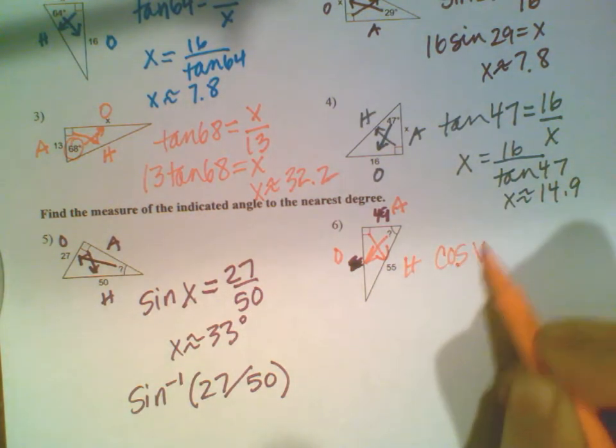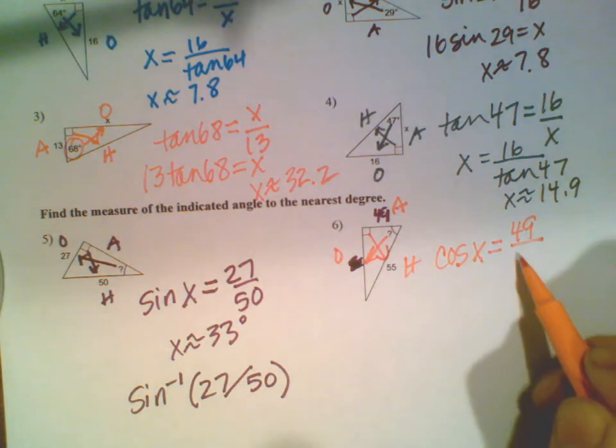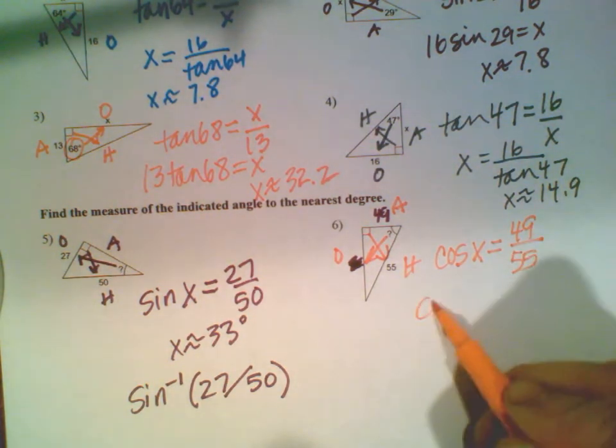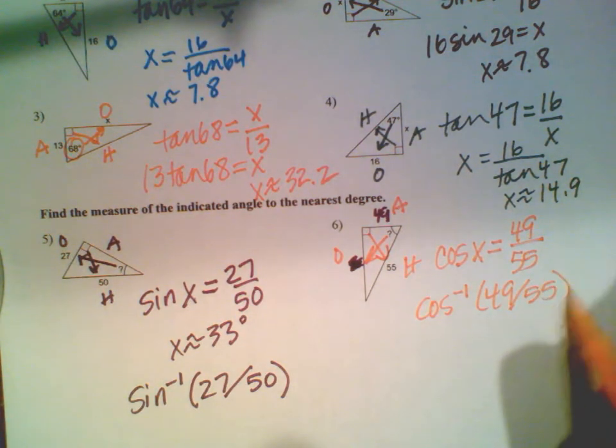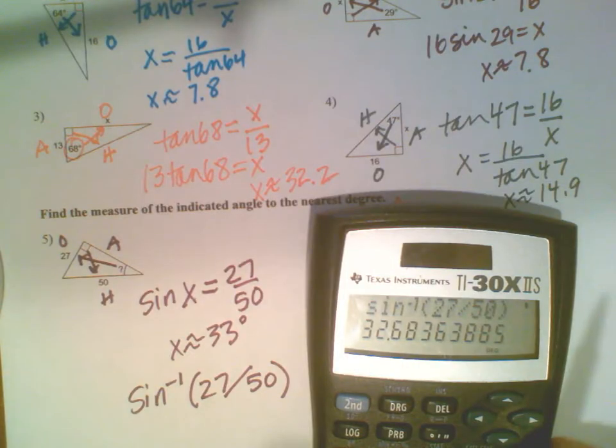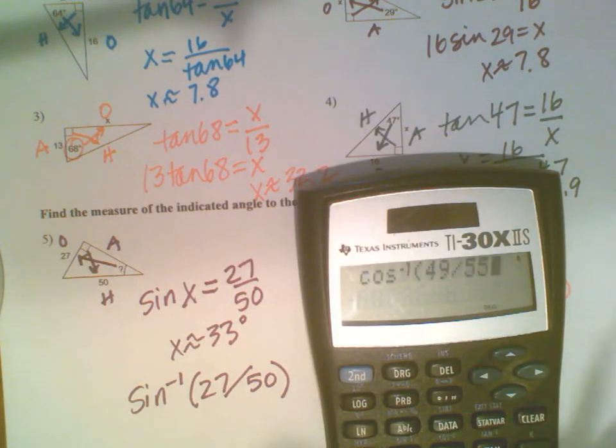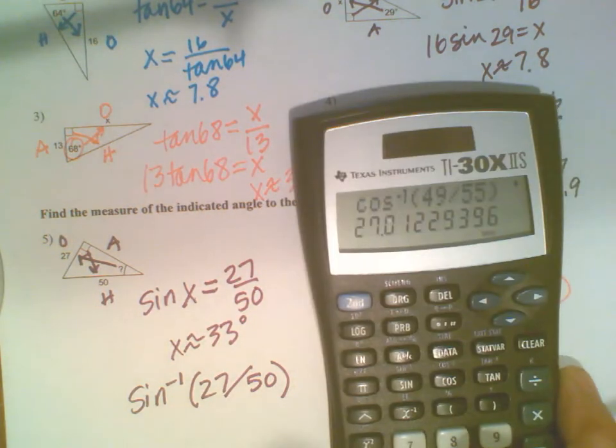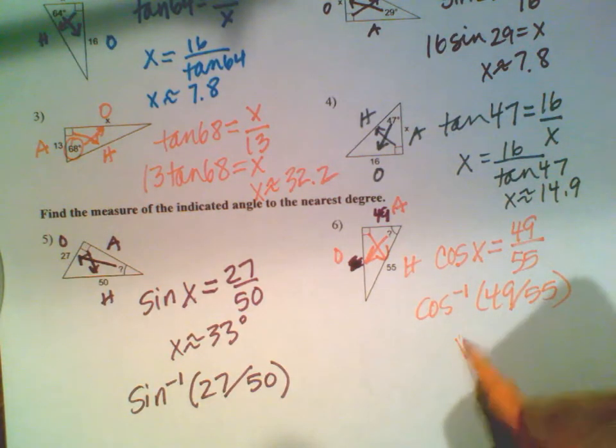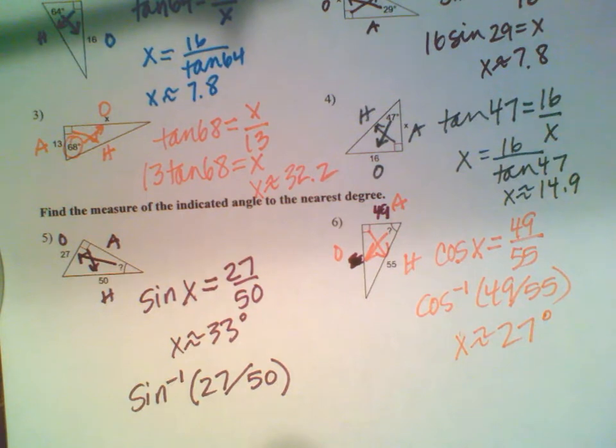Cosine of the angle equals the adjacent over the hypotenuse. I do cosine inverse of 49 divided by 55. Plug it in my calculator: second cosine, 49 divided by 55. That gives me my angle. My angle ends up being 27 degrees, so X is roughly 27 degrees.